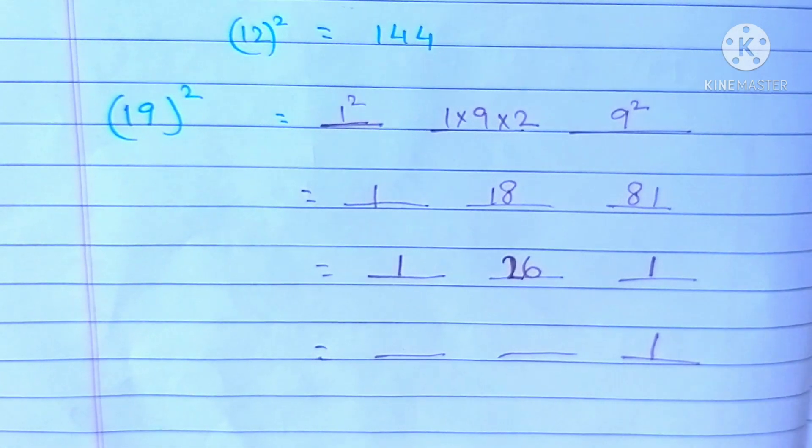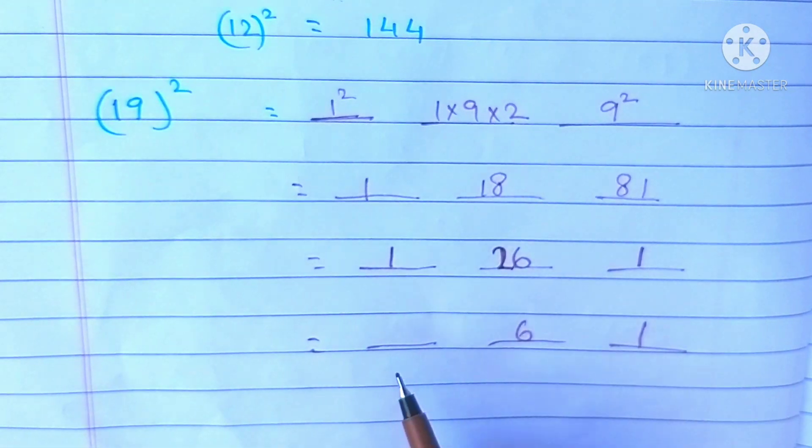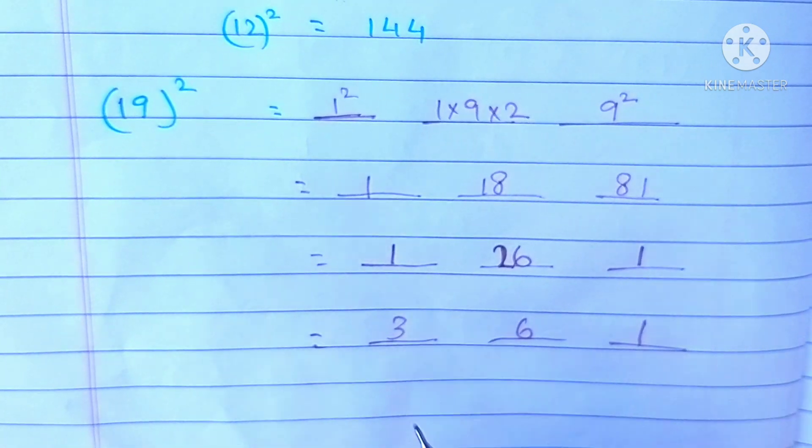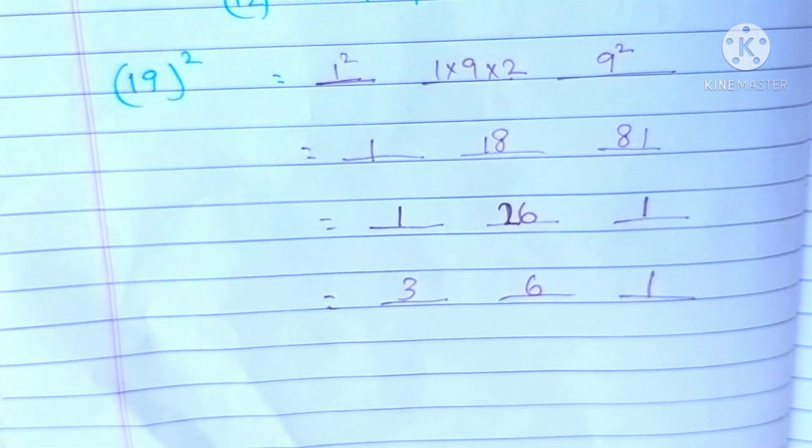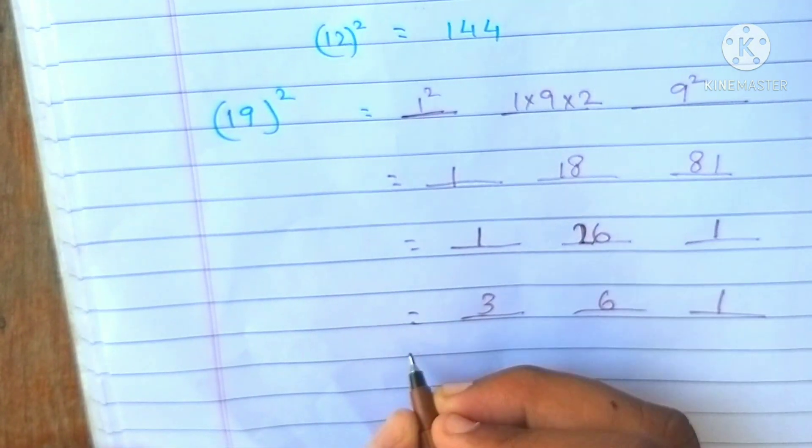1, I am keeping here. 6. The leftover is added to the next number. 2 plus 1 is 3. Therefore, 19 square is 361.